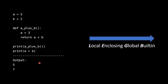Let's look at some code. Here we define a equals five, b equals two, and we have a function a_plus_b where we define a again and return the result of adding a plus b. We print the result of calling a_plus_b, and we also print the result of adding a plus b at the script level. So let's see what happens when we call a_plus_b.